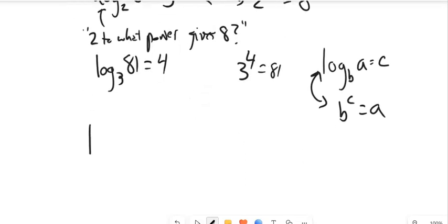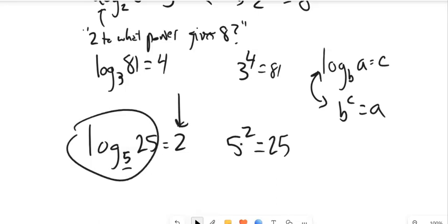So if I say log base 5 of 25 is 2, well, that's true because 5 to the second power is 25. Well, let me say again, logarithms spit out exponents, right? That 2 is an exponent with a base of 5. That's what they do.